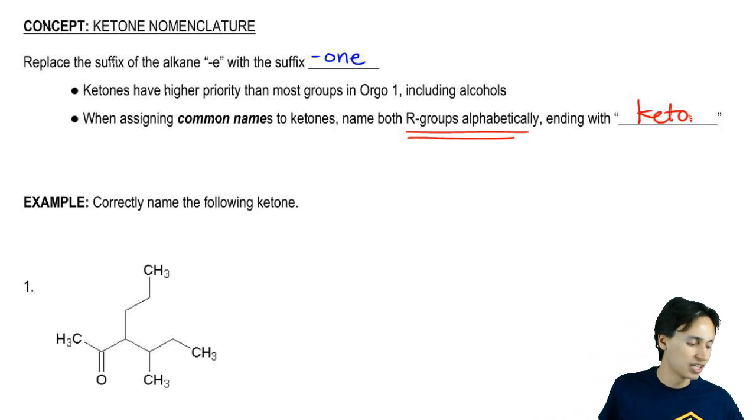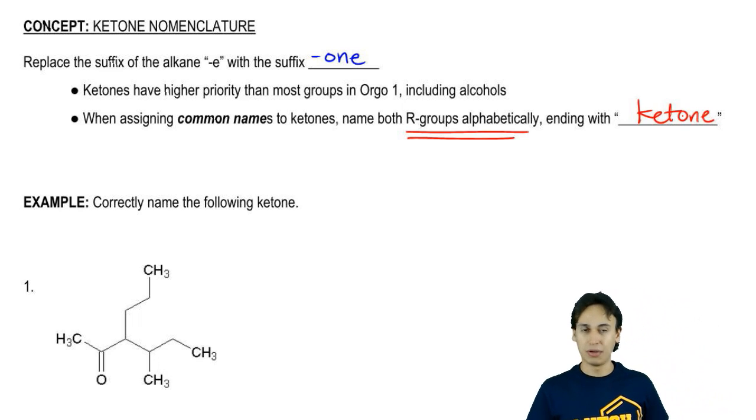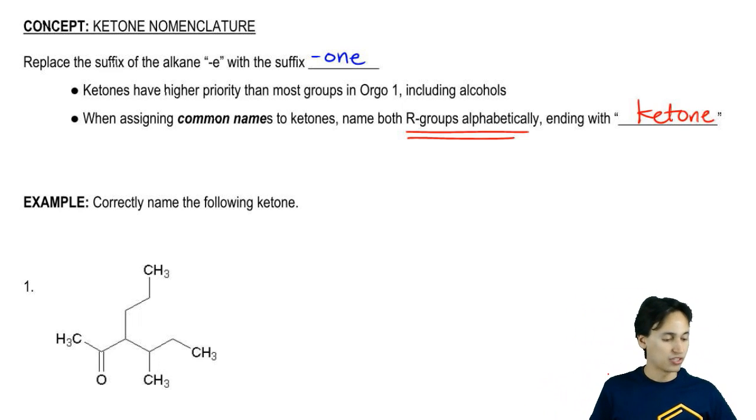Let me just show you a really quick example of the difference between common and IUPAC. Let's say you have a four-carbon chain with a carbonyl in the middle. Oh gosh, you can't see that. Sorry about that. Let me move it down a little bit. Much better.